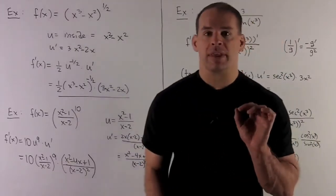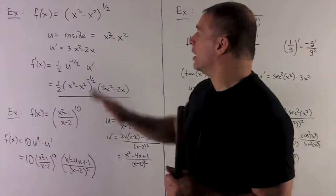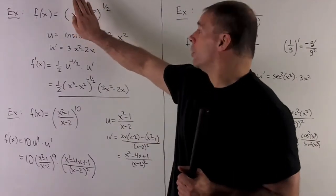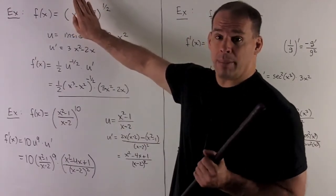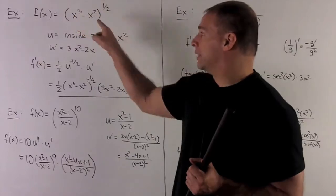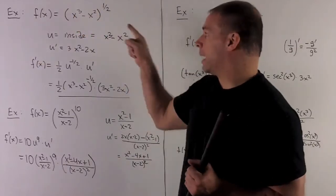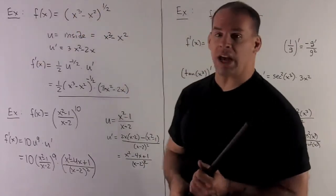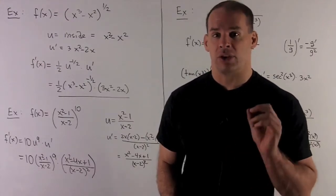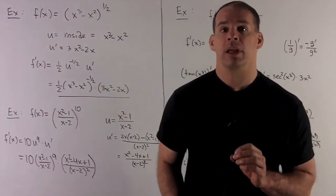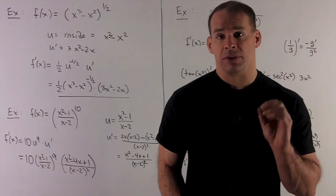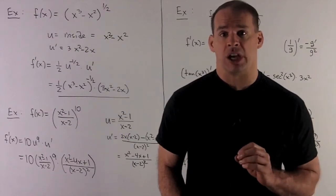When you get nimble with this, all you need to do is cover up the inside, take the one-half down, minus one-half exponent, put the inside back in, then multiply by the derivative of the inside, which is 3x squared minus 2x, and you're done. You don't want to do that until you have enough practice and feel comfortable with the chain rule.